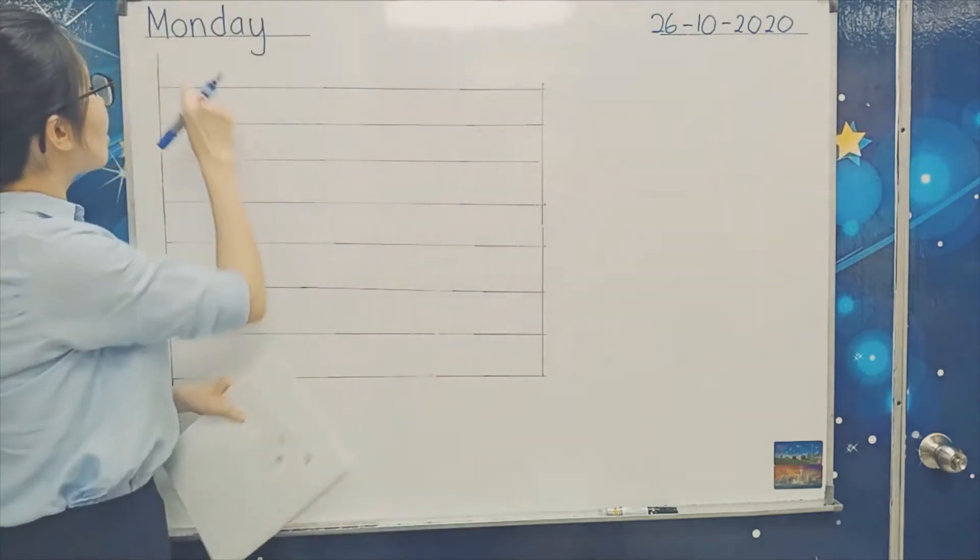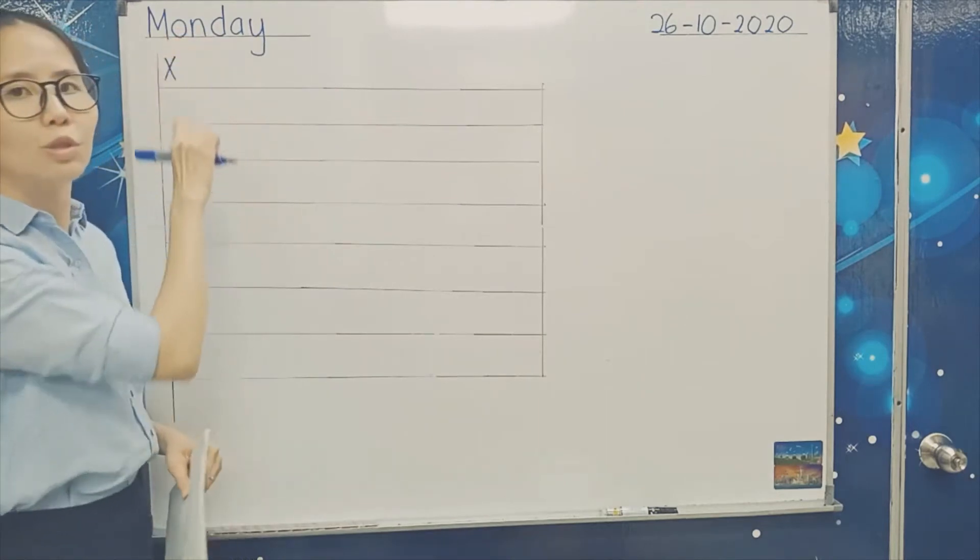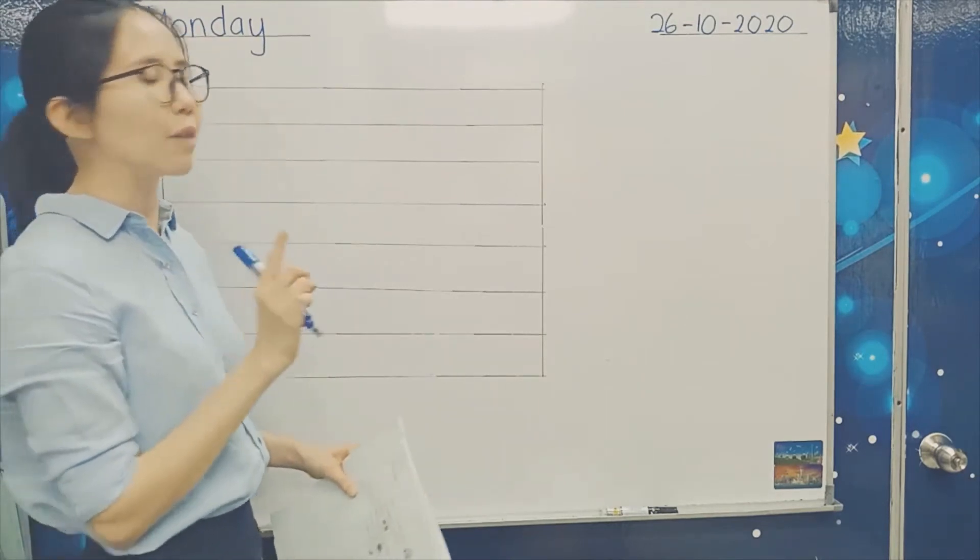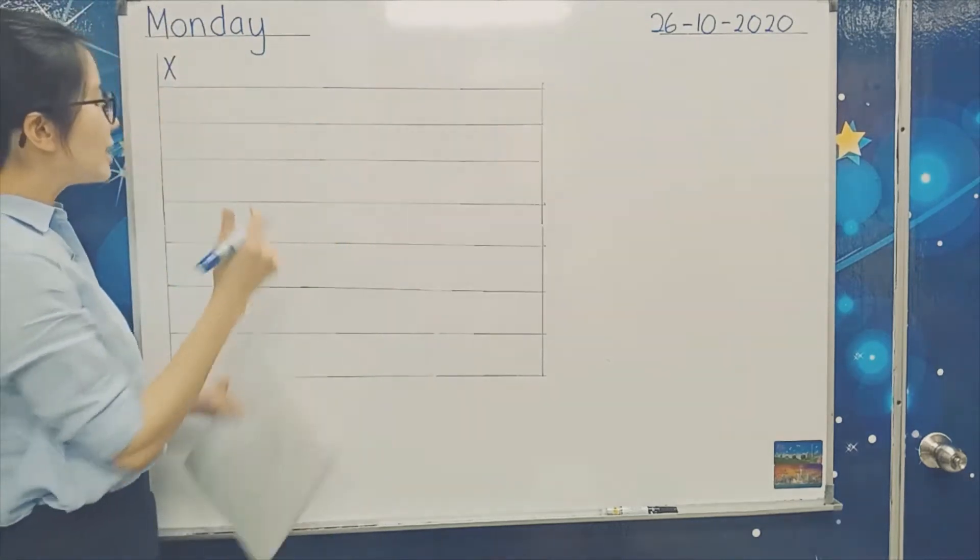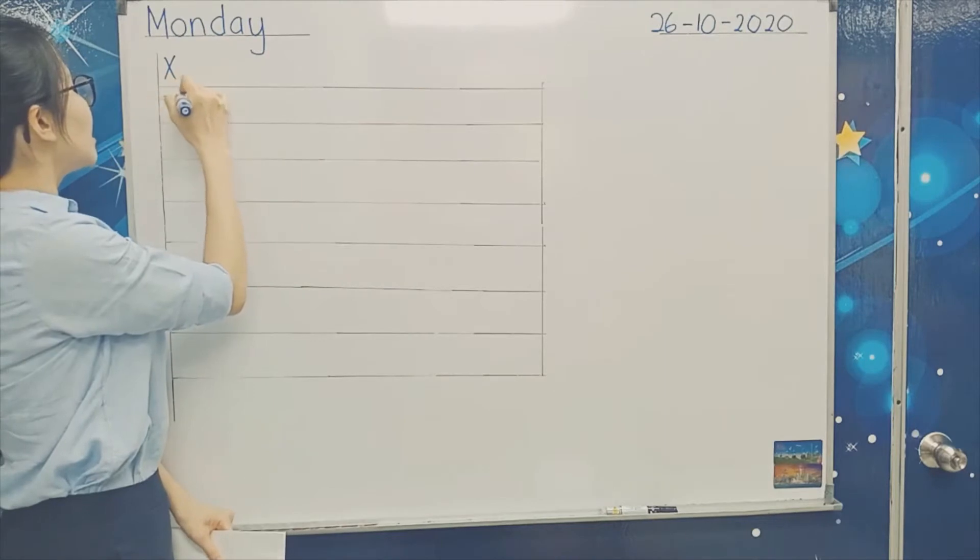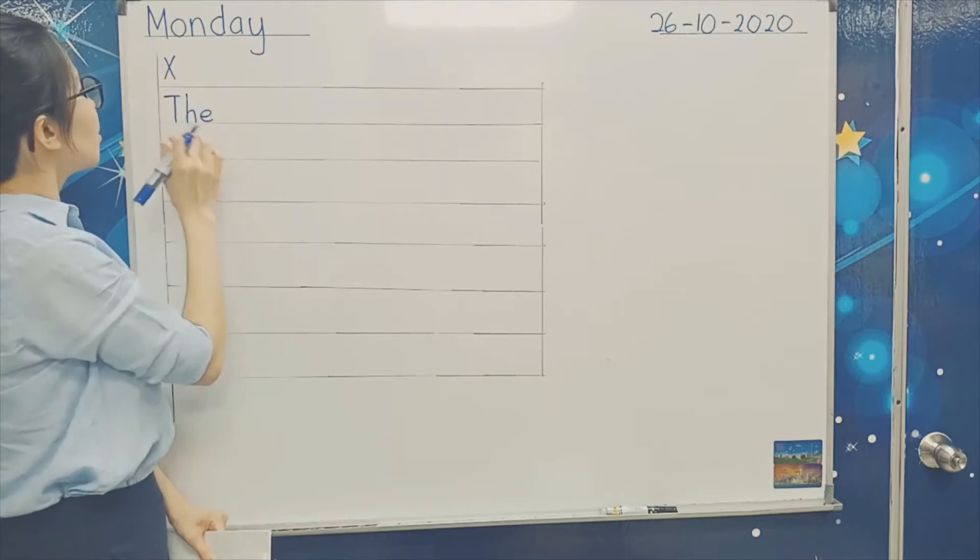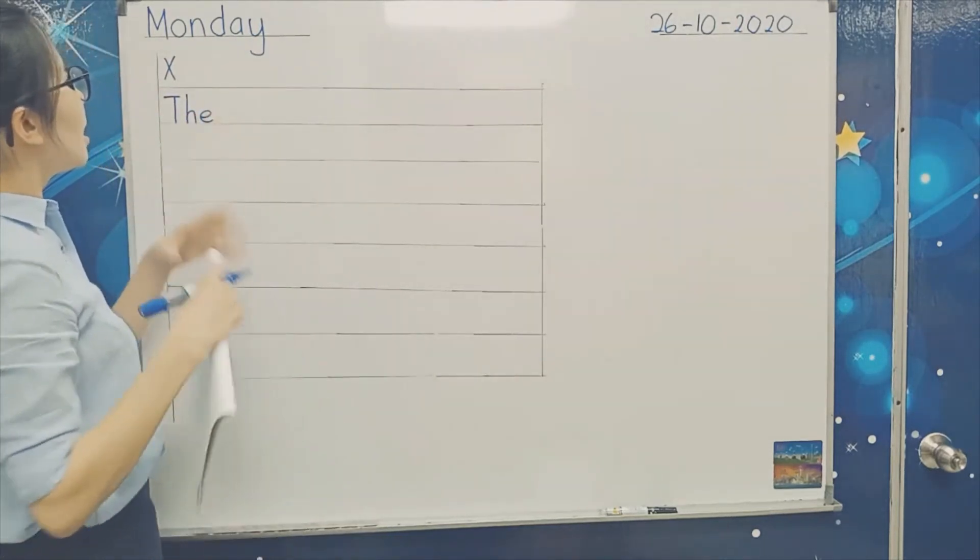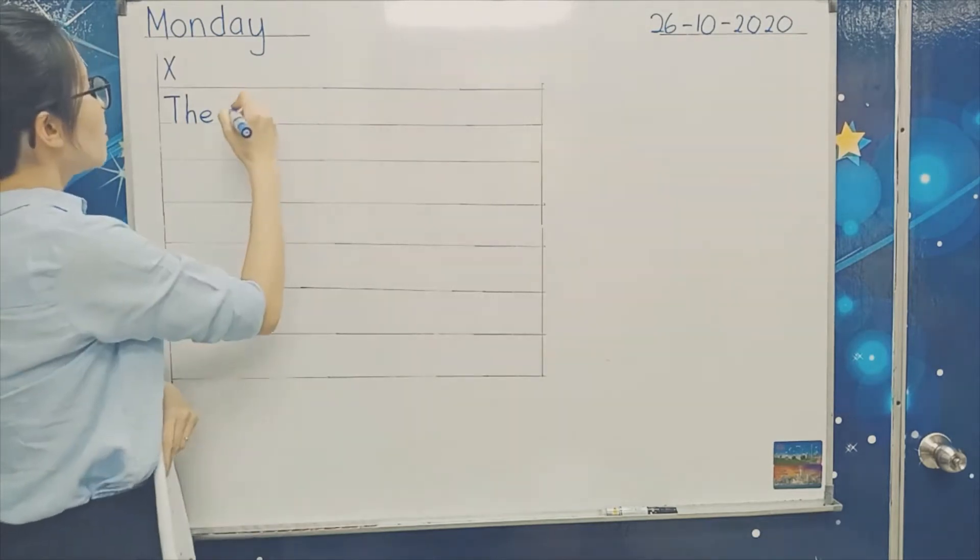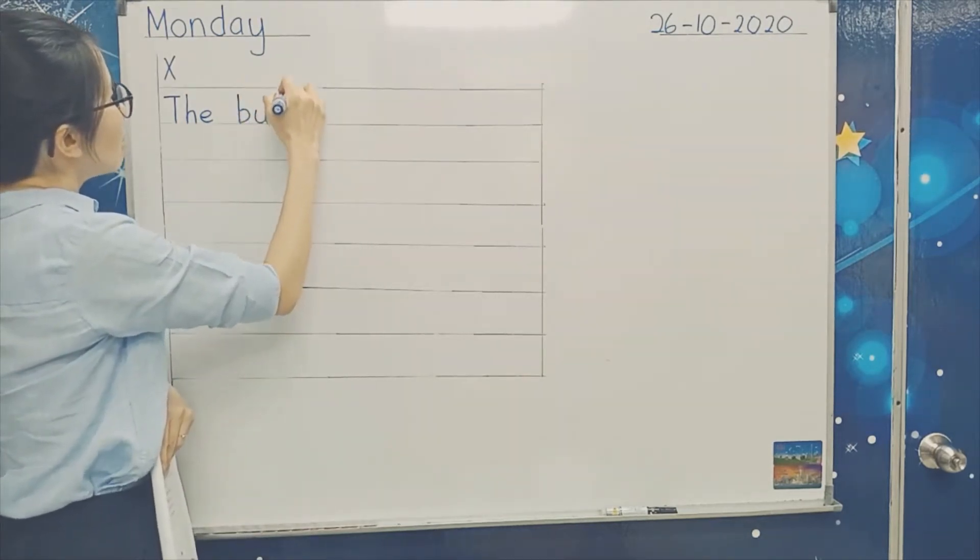So let's start here. The first line I want you to draw an X because we don't want to write on the first line. We are going to write on the second line. So let's start writing. Let's write T-H-E, the. I'm just going to do it nicely for you. The, and then you put one finger, and then you write B-U-L-L.